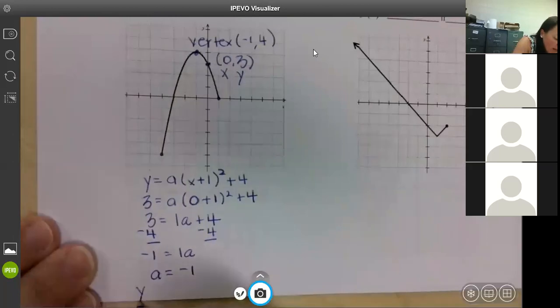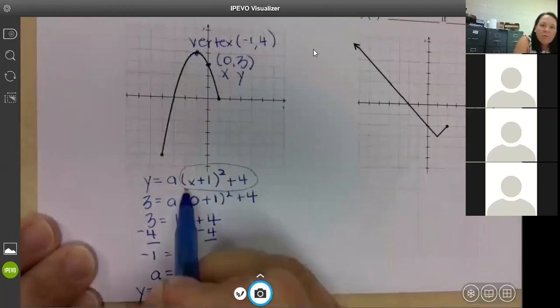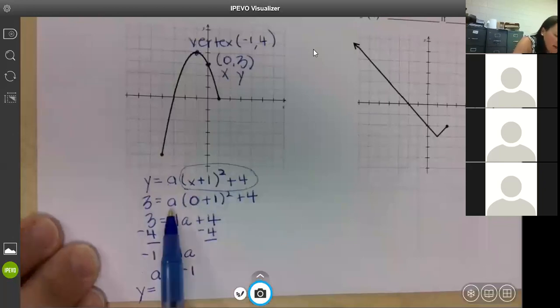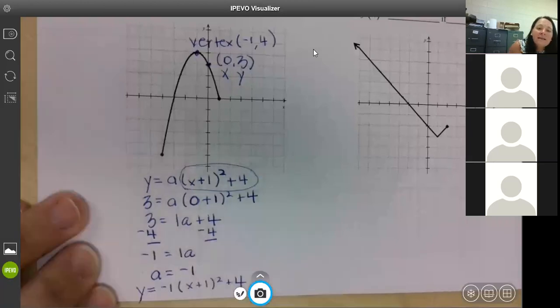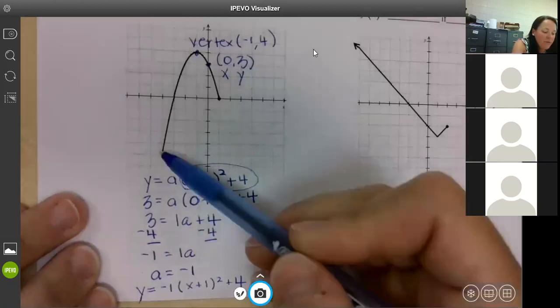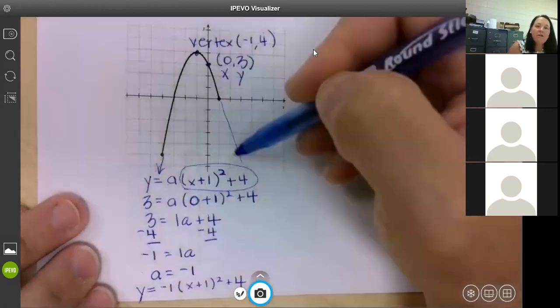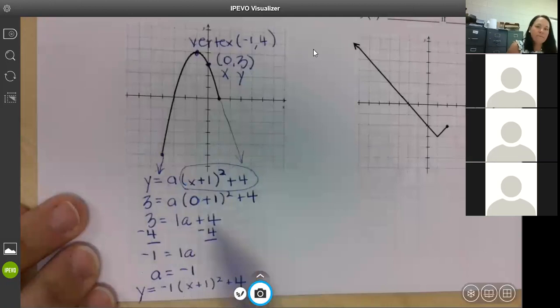What this does is it gives us our equation. Our equation would be y equals negative 1 and then you're going to finish it out with all this. All I did was plug in a. Okay. Again, all I did was plug in a. x plus 1 squared plus 4. This is your equation. So if I continue to graph this further on, and I don't want you to write this. I'm just showing you. If I continue to do that, that equation right there graphs this graph.